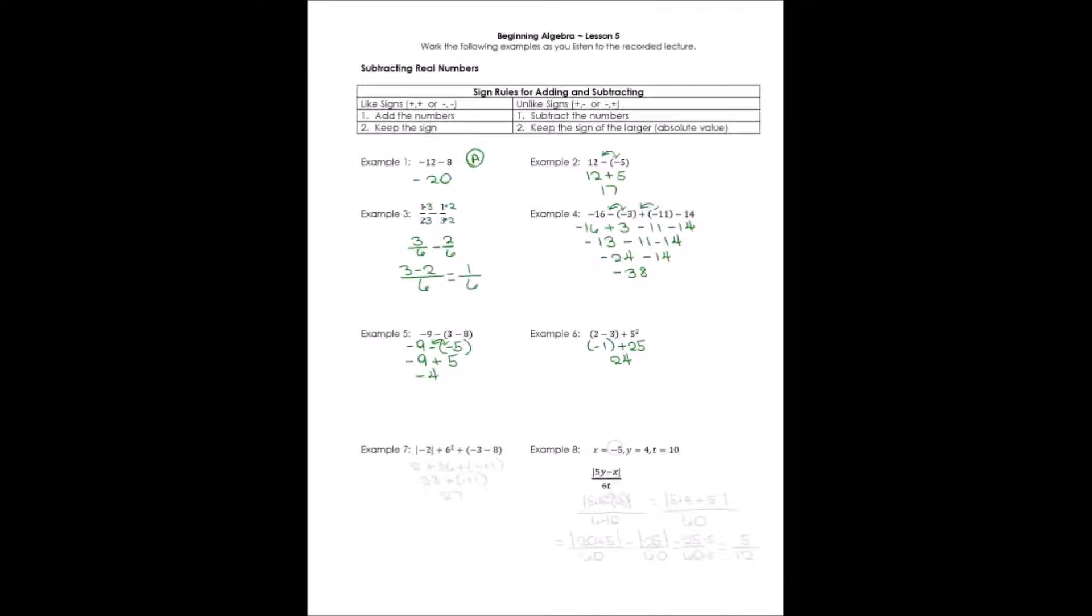For 7, let's resolve some of this absolute value, parentheses, and exponents, and then worry about combining our terms. Absolute value of negative 2 is a positive 2. Plus 6 squared is going to give me 36. Plus, I'm going to have to work inside these parentheses, negative 3 minus 8. Both of them are negative, I'll add them together and keep that sign.